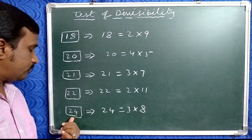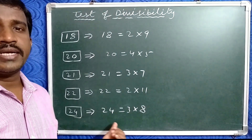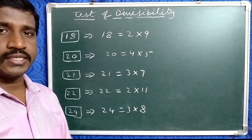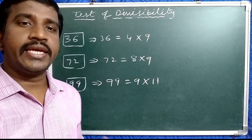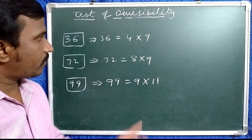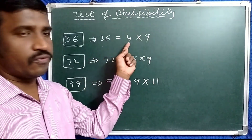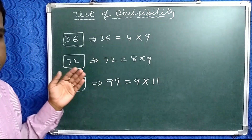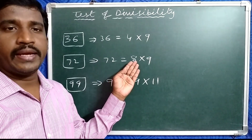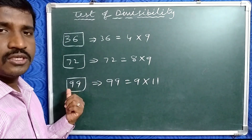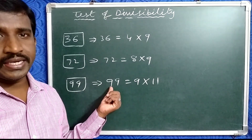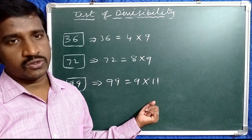If a number is exactly divisible by 24, it is divisible by 3 and 8, because 24 equals 3 times 8. Any number divisible by 36 is divisible by 4 and 9, since 36 equals 4 times 9. A number divisible by 72 is divisible by 8 and 9. And any number divisible by 99 is divisible by 9 and 11.